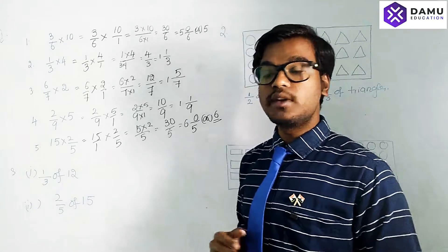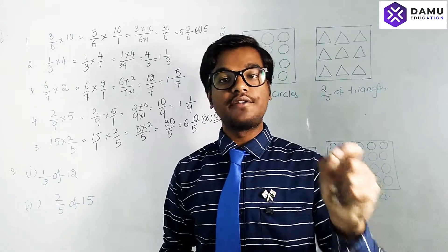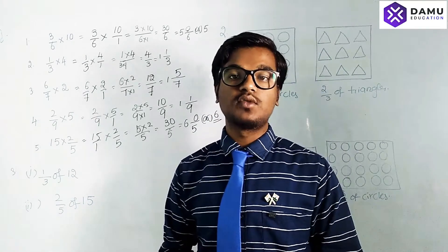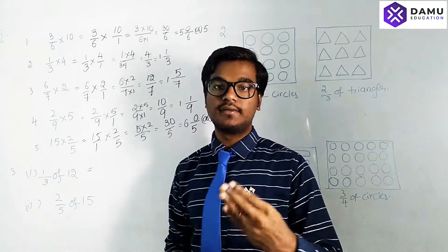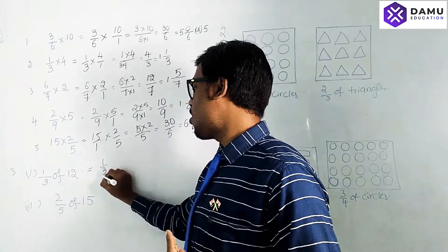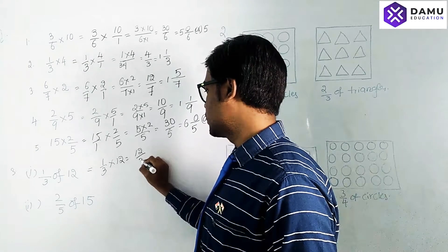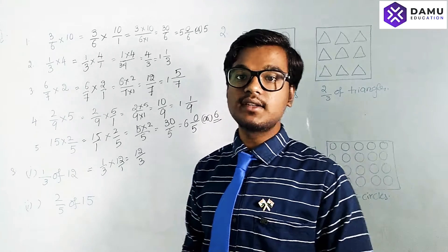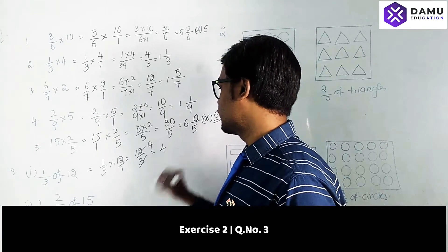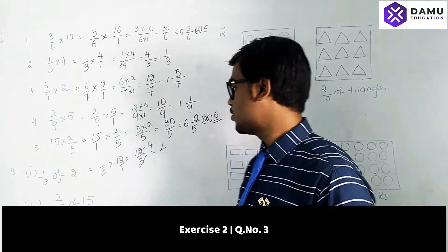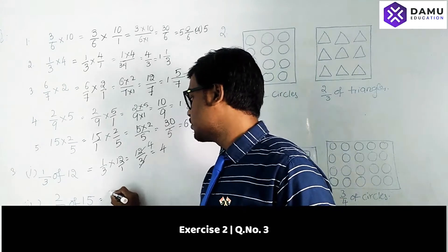For the third question: 1/3 of 12. In fractions, the word 'of' means multiplication. So 1/3 of 12 means 1/3 × 12. As I showed in the first question, this is 12/3 = 4. We can also express it as a mixed fraction: 3 × 4 = 12 with remainder 0, giving 4 and 0/3, which is simply 4.